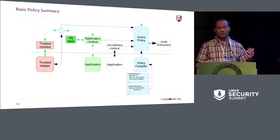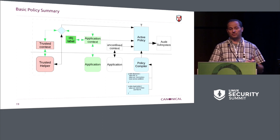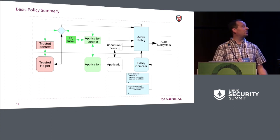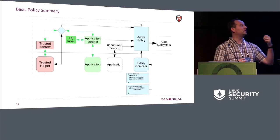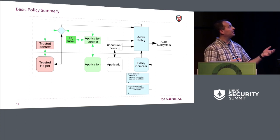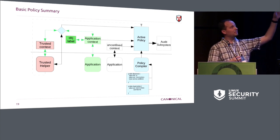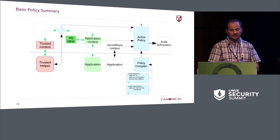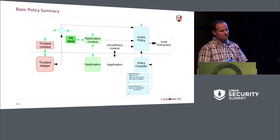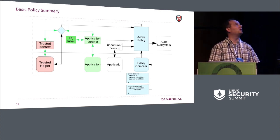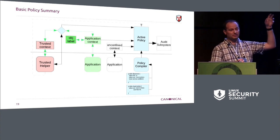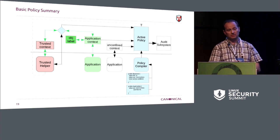The basic overview of how it works isn't very different from other security modules. Your text-file policy goes into a compiler that loads it into the kernel, so you have some active policy. Unconfined looks at the active policy at times using the attachment conditionals, but it's mostly getting out of the way — it's a special case all over the place. A confined application has a context that references into the policy and it's being enforced.